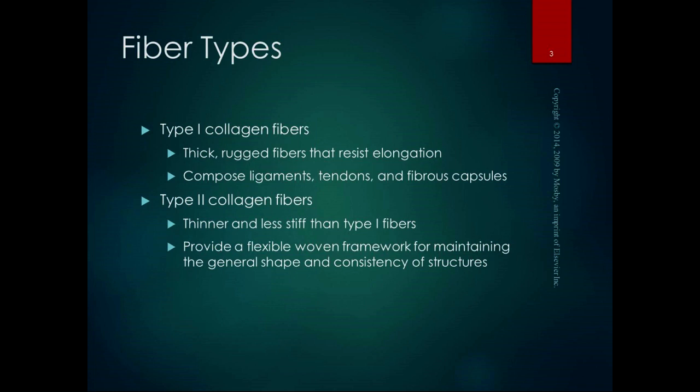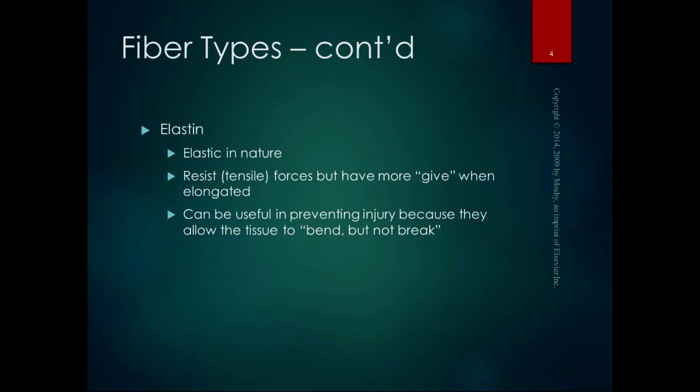Type 2 collagen fibers are thinner and less stiff than type 1 fibers. Things that have to be more flexible — that flexible woven framework for maintaining general shape and consistency of structures — a lot of the fascia and subcutaneous tissue is composed of type 1 collagen fibers in some sort of ground substance. Elastin, just like its name sounds, is elastic. Anything ending in -in or -en is usually a protein, so elastin is a more elastic protein.